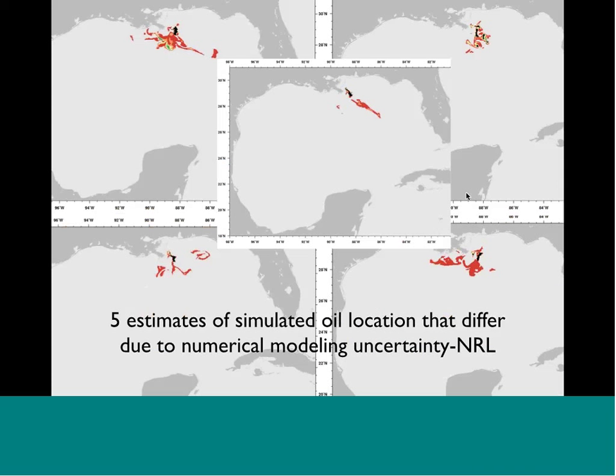Shown here are five estimates of simulated oil locations done by colleagues at the Navy Research Lab. In each simulation the oil comes out in the exact same location, but the ocean currents and wind forcing are perturbed by the amount of uncertainty we know about. You can see the distribution of oil is much different across the five simulations, even though everything is the same except for small differences in ocean currents and wind forcing.